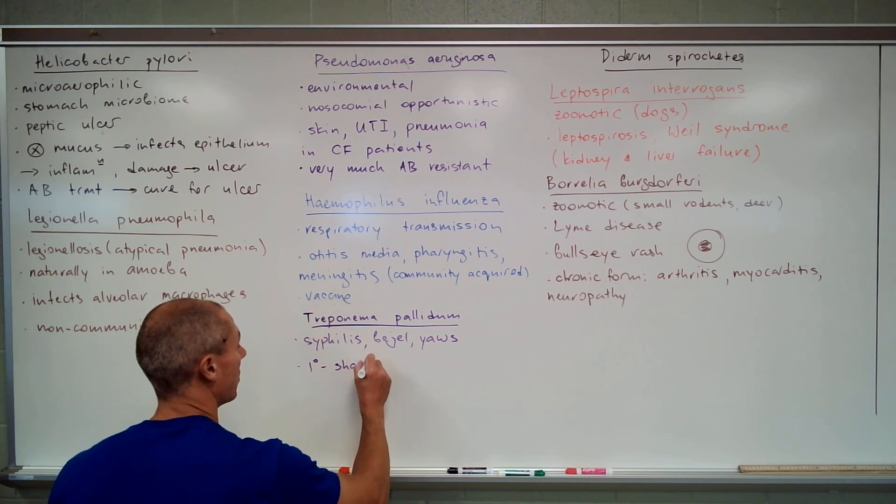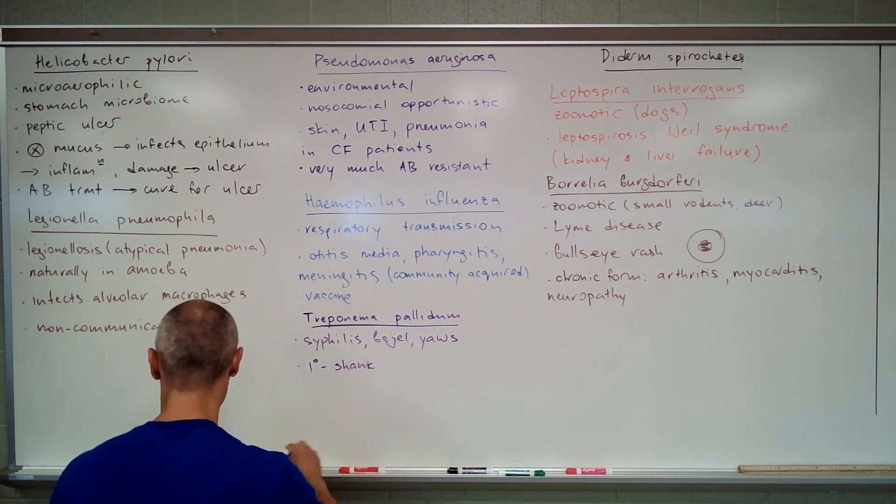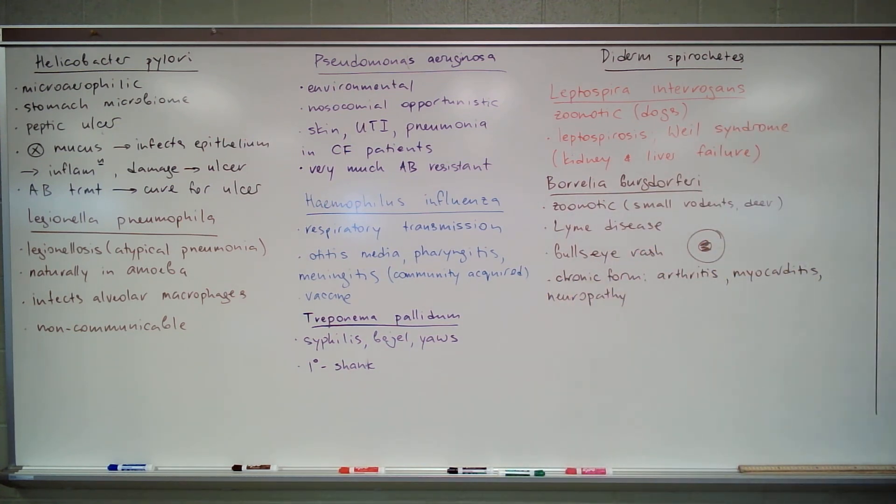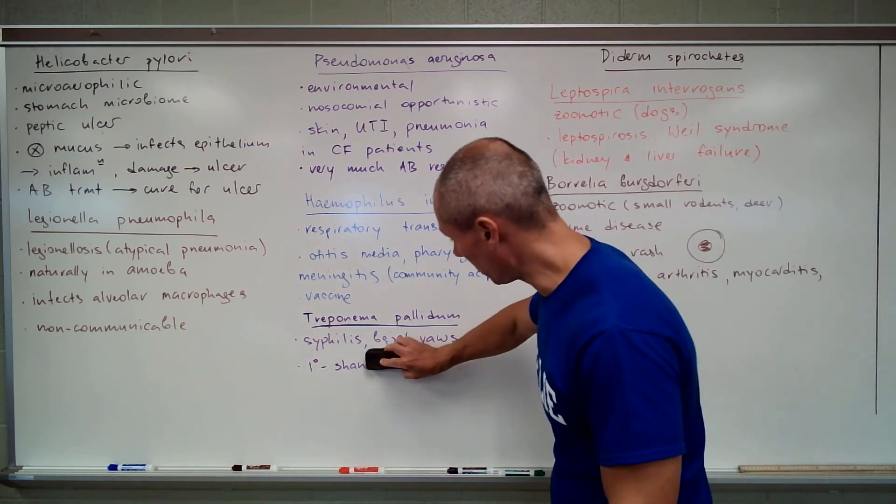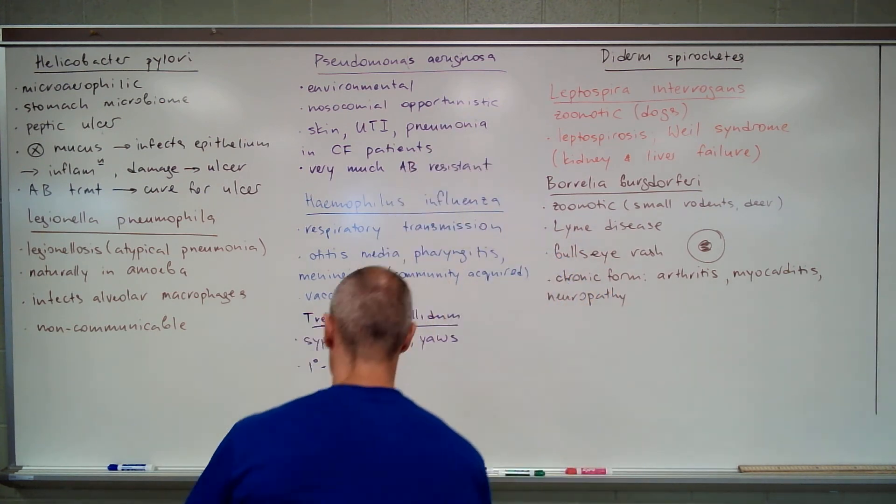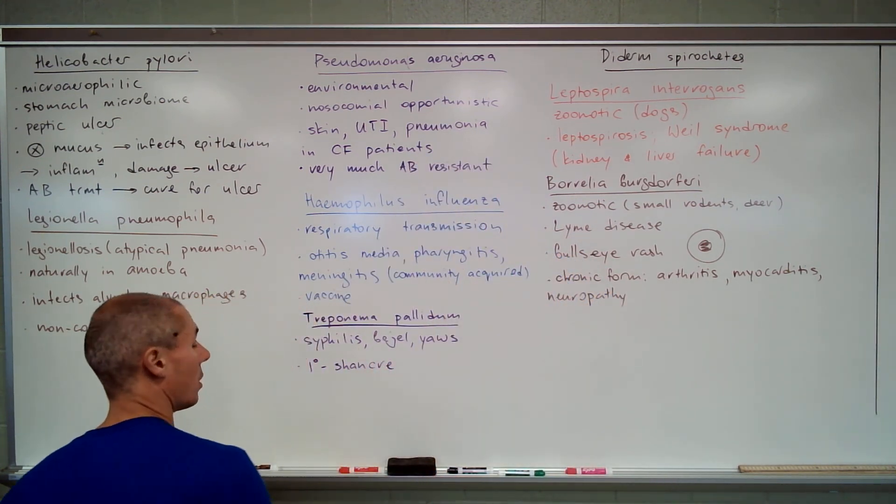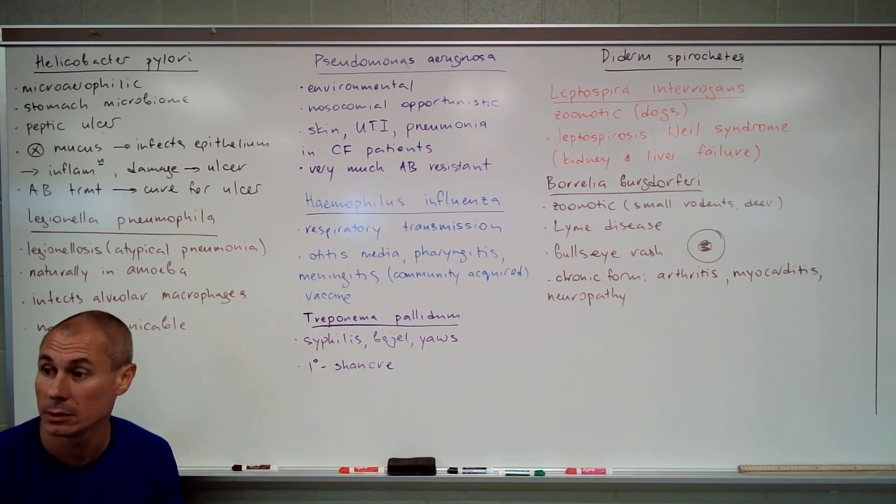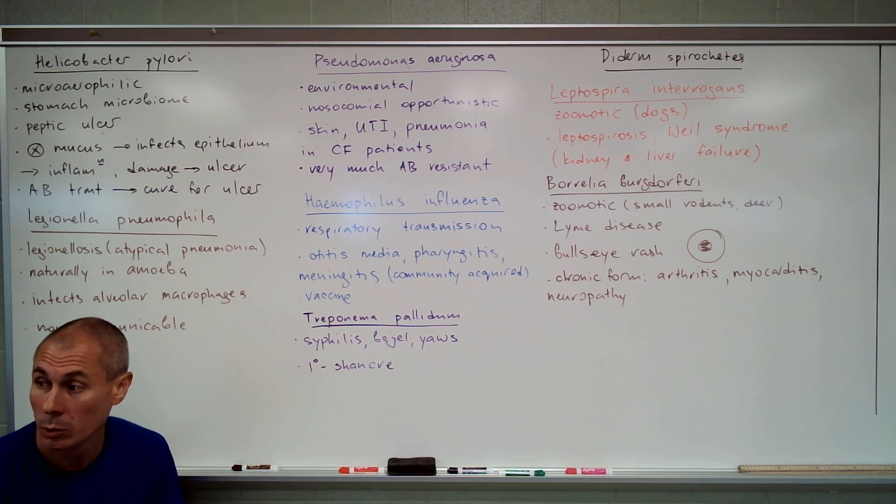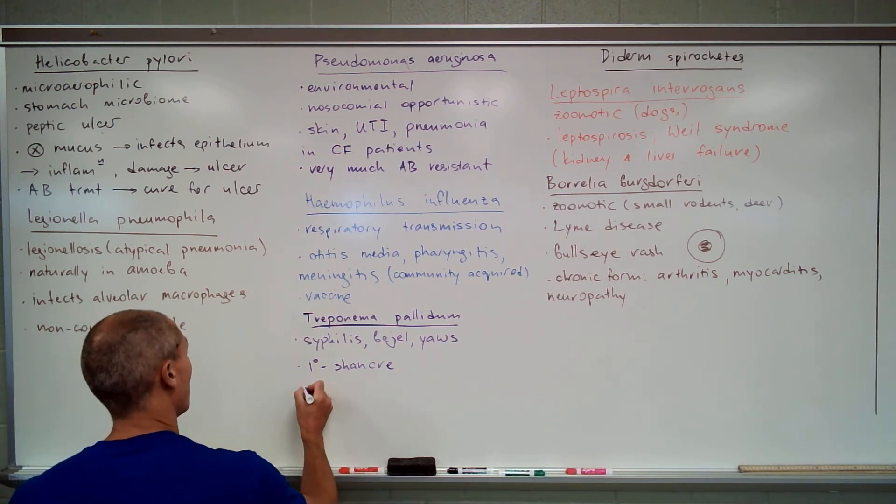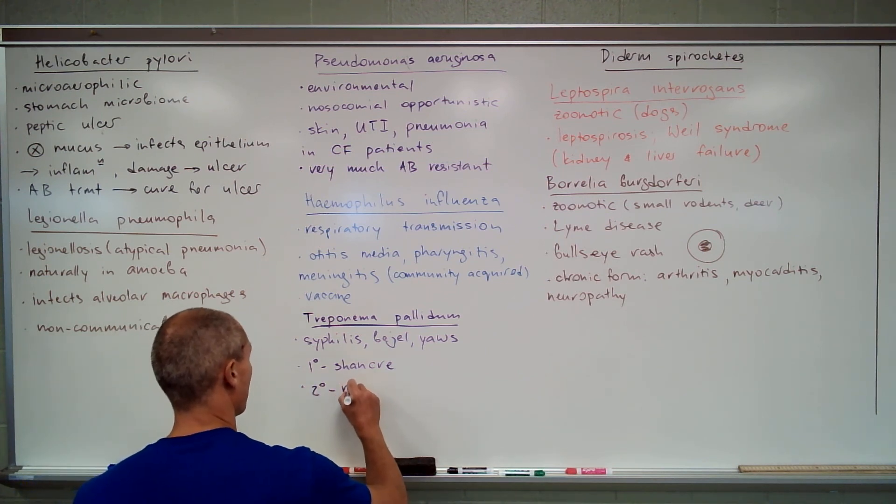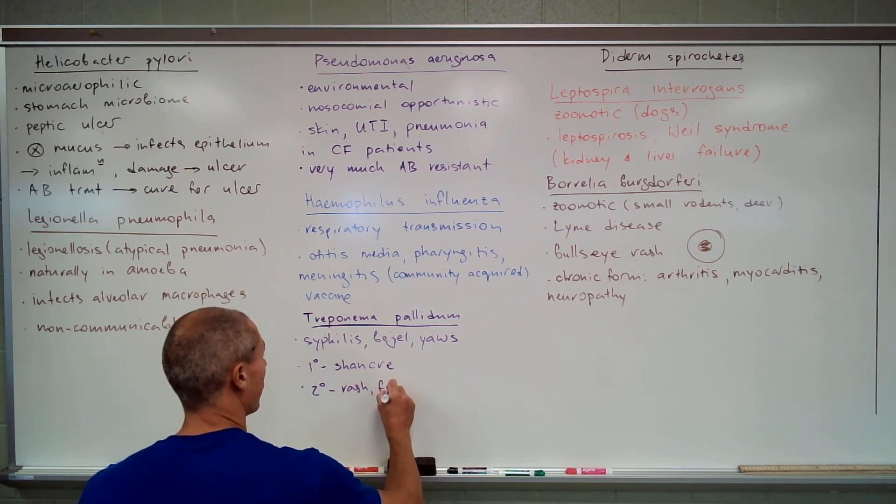So there are three stages to syphilis. Primary syphilis that manifests with chancre, I think it's C not K. French people know how to name the sickness. So chancres are on the mucosa of the reproductive organs, whether on the glans penis or vaginal mucosa. And then if it's not treated, it can progress to secondary syphilis with rash and fever.